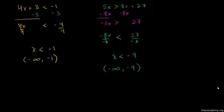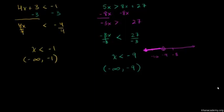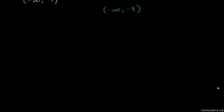If you wanted to show it on a number line, it would look like this. This would be negative 9, maybe negative 8 here, and negative 10 here. You would start at negative 9, not include it because we don't have an equal sign, and go all the way down to negative infinity — everything less than negative 9.